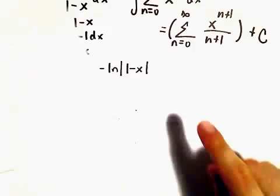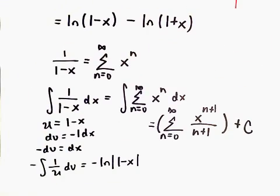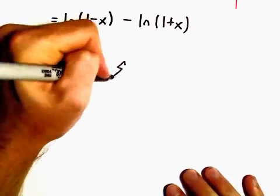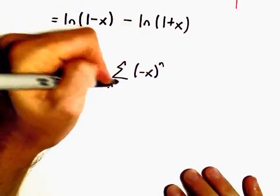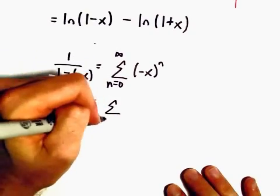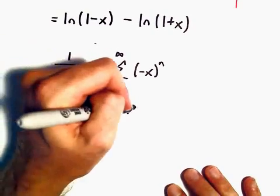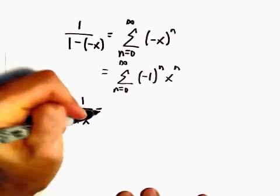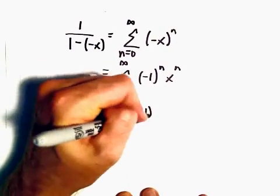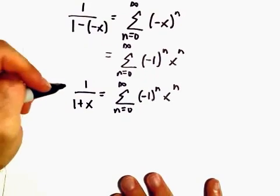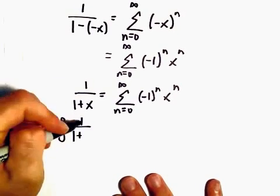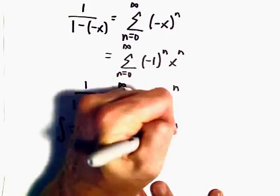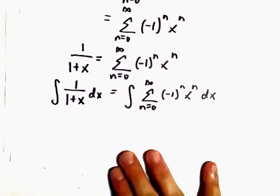Now I'm going to go back and do the exact same thing for the natural logarithm of 1 plus x. We can write 1 plus x as 1 minus (negative x), so we'll have negative x raised to the n, which we can rewrite as negative 1 to the n times x to the n. So 1 over (1 plus x) equals the series of negative 1 to the n times x to the n. Now we integrate both sides: the integral of 1 over (1 plus x) dx equals the integral from n equals 0 to infinity of negative 1 to the n times x to the n dx.